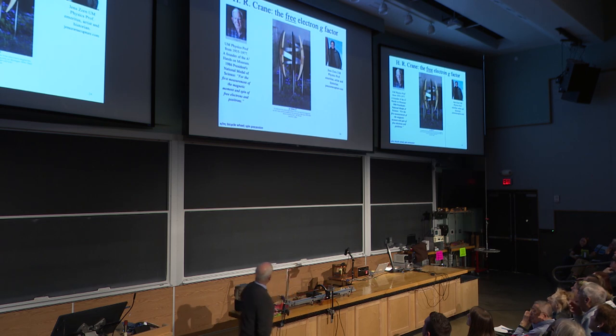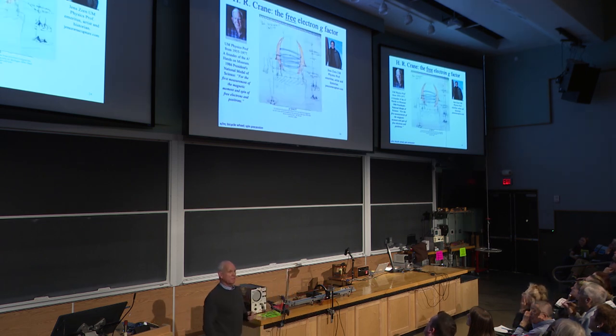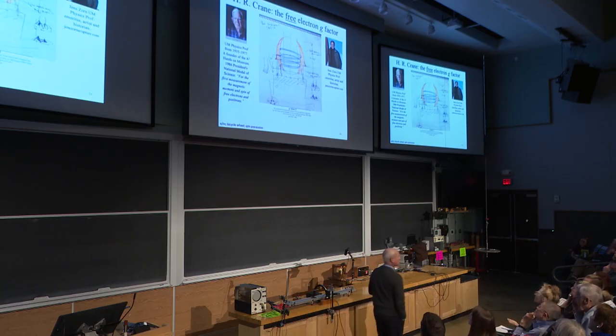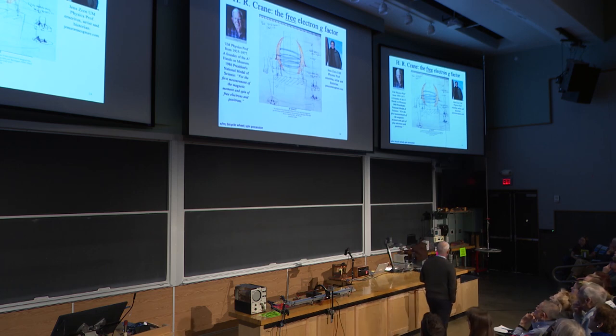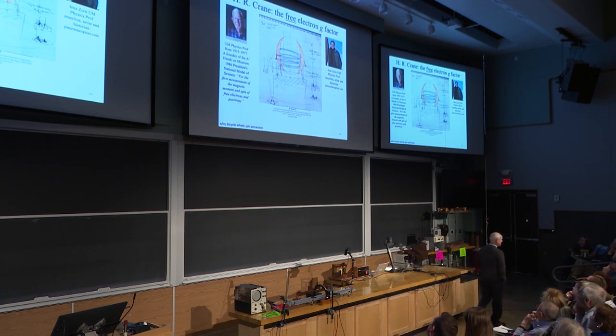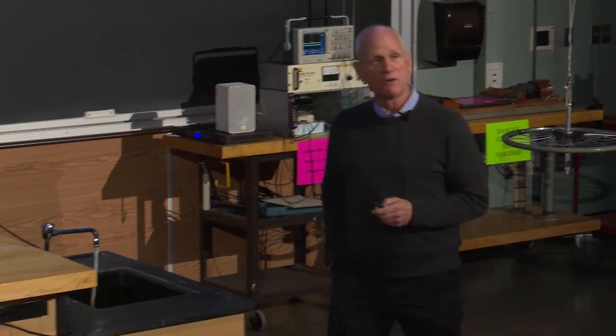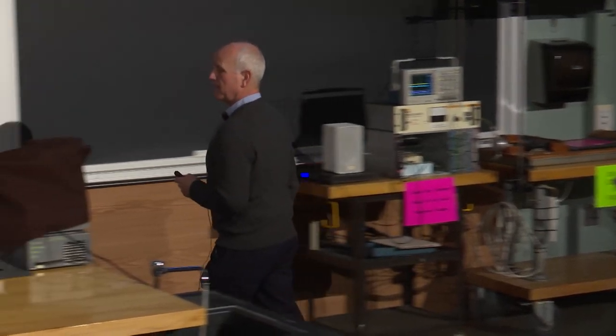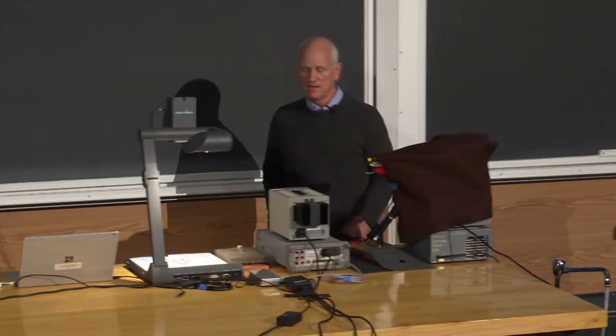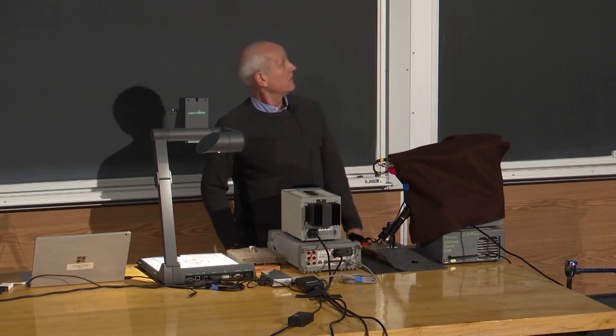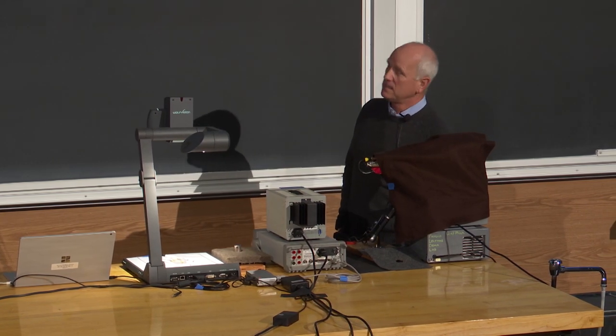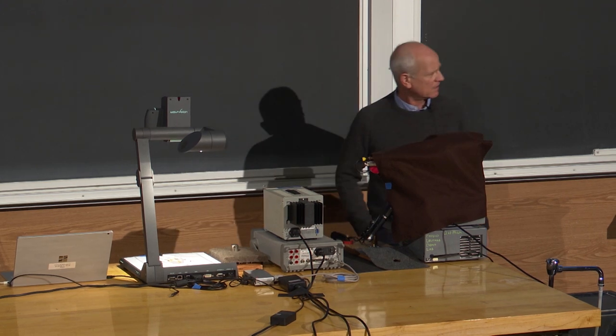So here's a sculpture that is actually right outside. You can check this out by Jens Zorn. Jens is here. He's an emeritus professor in our department, a tremendous artist and historian of physics in the department and has been making physics sculptures. And this one commemorates the experiment of Crane. Now, to explain how the experiment works, I'm actually going to use a sketch from Jens's notebook here.